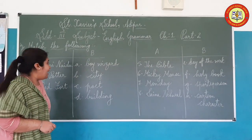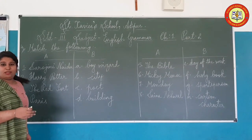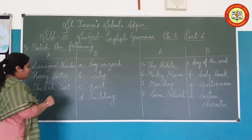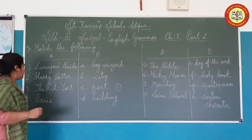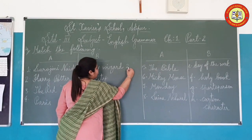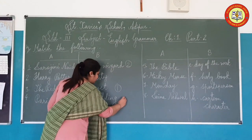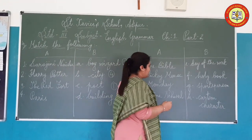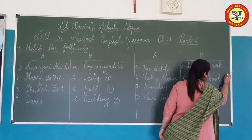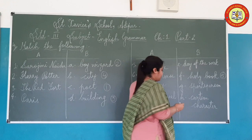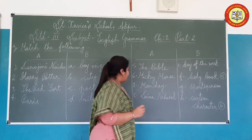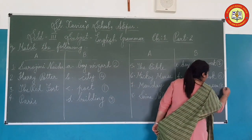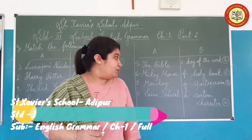Here is the last exercise in this chapter — let's match the following. One side has proper nouns and the other side has common nouns, and we have to match appropriately. First: Sarojini Naidu — she is the poet. Harry Potter — wizard. The Red Queen is a villain. Palace — city. The Bible — it's a holy book. Mickey Mouse — cartoon character. Monday — day of the week. And last, Saina Nehwal — she is a sports person. So we are familiar with this and we have completed the chapter. Thank you.